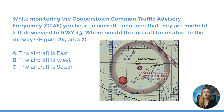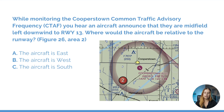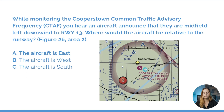While monitoring the Cooperstown common traffic advisory frequency, you hear an aircraft announce that they are midfield left downwind to runway 13. Where would the aircraft be relative to the runway — figure 26, area 2? If the aircraft is landing on runway 13, their heading is 130, so they're landing in the southeast direction. The aircraft states they are left downwind, meaning they're flying parallel and in the opposite direction of the runway, towards a northwest heading. They will be to the right side of the runway because they are making left turns to reach it. So our answer is east — the aircraft is located east of the runway.